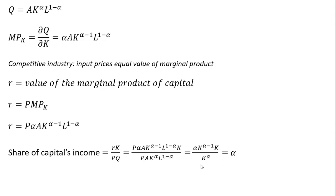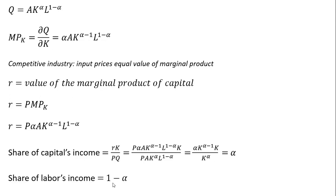We can do some final cancellations. In the numerator, adding up the exponents on the K term, we're left with K to the alpha, and that's being divided by K to the alpha, so we're just left with alpha. The share of capital's income is going to be alpha. To get the share of labor's income, the simple method is just 1 minus the share of capital's income, so it's going to be 1 minus alpha.